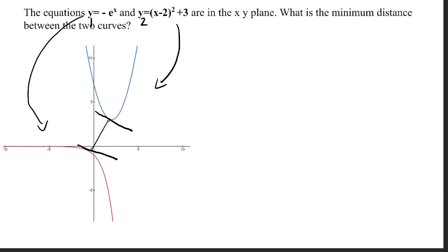This problem becomes difficult because the two points from which the shortest line will be drawn do not have to have the same x value. We can see from the graph that the x value at the lower point is not equal to the x value at the higher point.